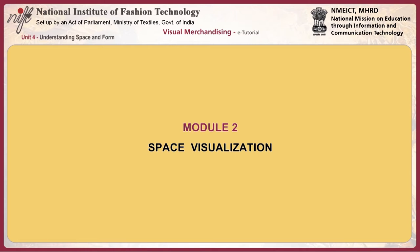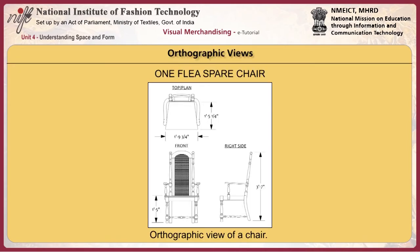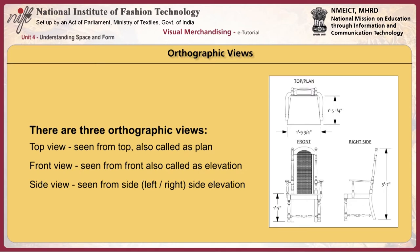Now we move on to learn about space visualizations. This can be learnt through an understanding of technical drawings, which aid visual communication. The first of these is orthographic views. Orthographic views are two-dimensional drawings used to represent or describe a three-dimensional object. They represent the exact shape of an object seen from one side at a time, looking perpendicular to it, without showing any depth. Primarily there are three orthographic views: the top view seen from the top, also called the plan; the front view seen from the front, also called the elevation; and the side view seen from the left or right side elevation.